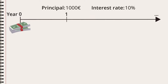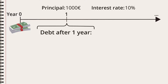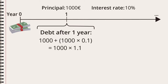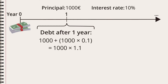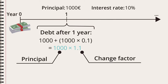This represents time, and Michael borrows the money here where time is zero. After one year, Michael owes the bank the principal amount plus the principal times the interest rate. We can express this as the principal times 1.1, meaning the debt has increased by ten percent. When talking about a loan, it's easiest to use this way of writing it: the principal times the change factor. The change factor is 1 plus the interest rate.